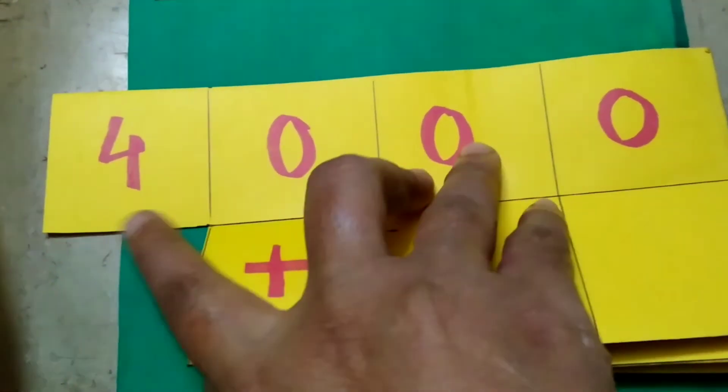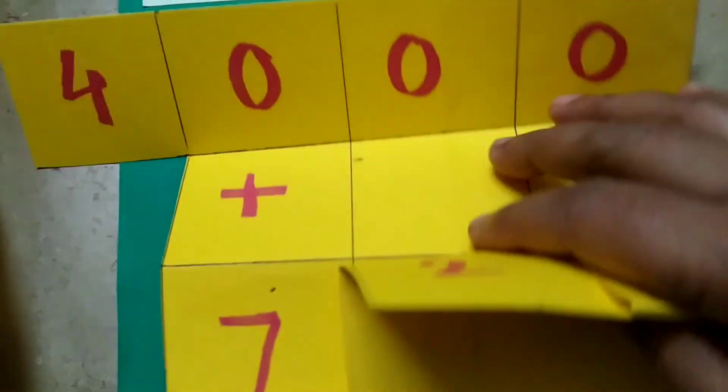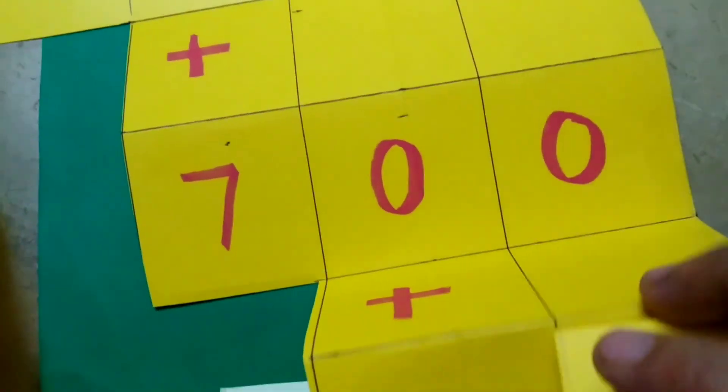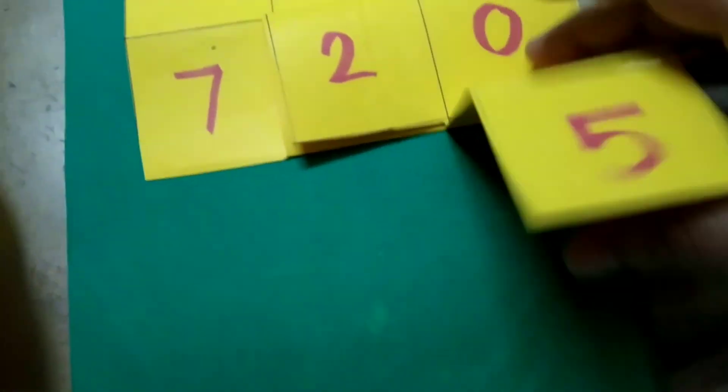So the expanded form of 4725 is 4000 plus 700 plus 20 plus 5. See another.